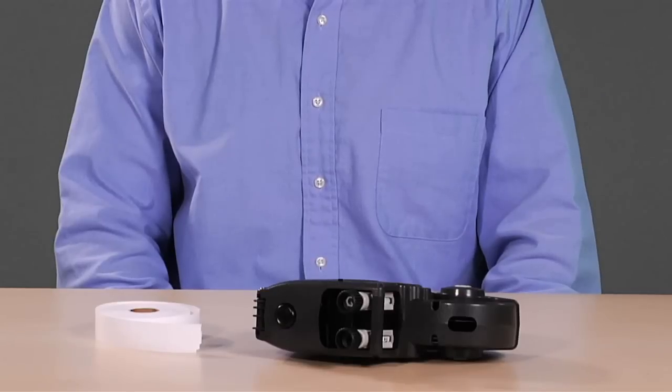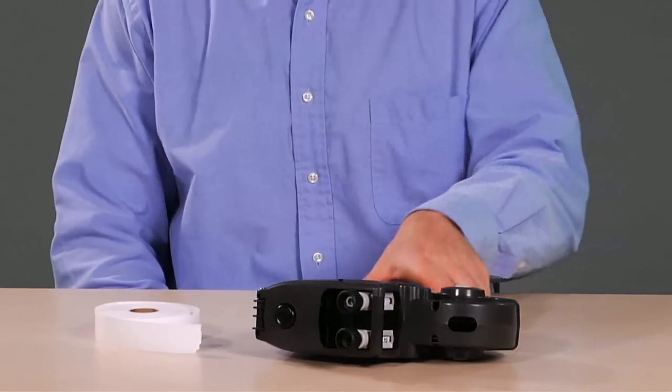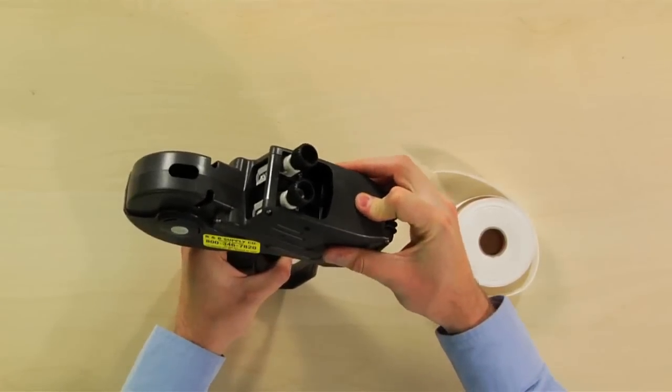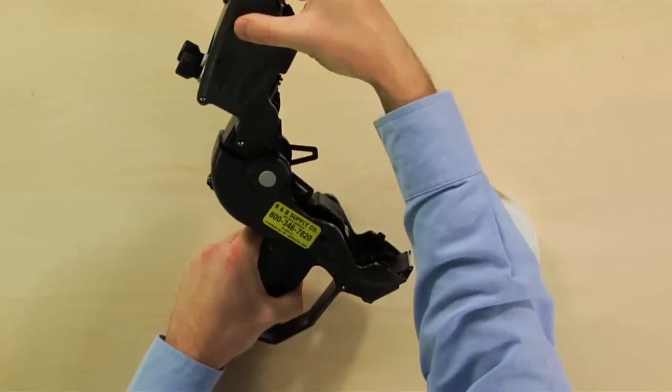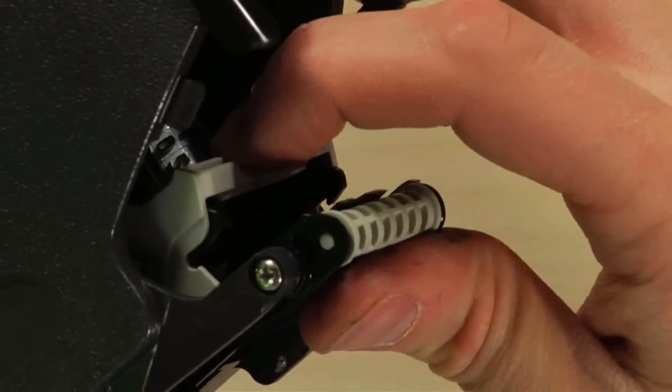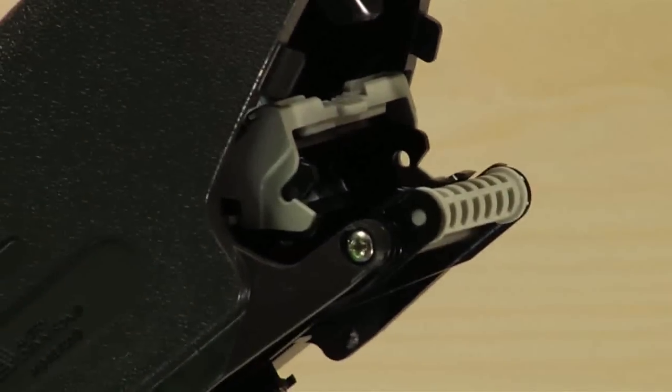Let's start off by preparing our Monarch 1152 by inserting the ink roller. Open the gun by pressing the black button on top of the gun. Press down and insert the ink roller. Release the bar and the ink roller is loaded.